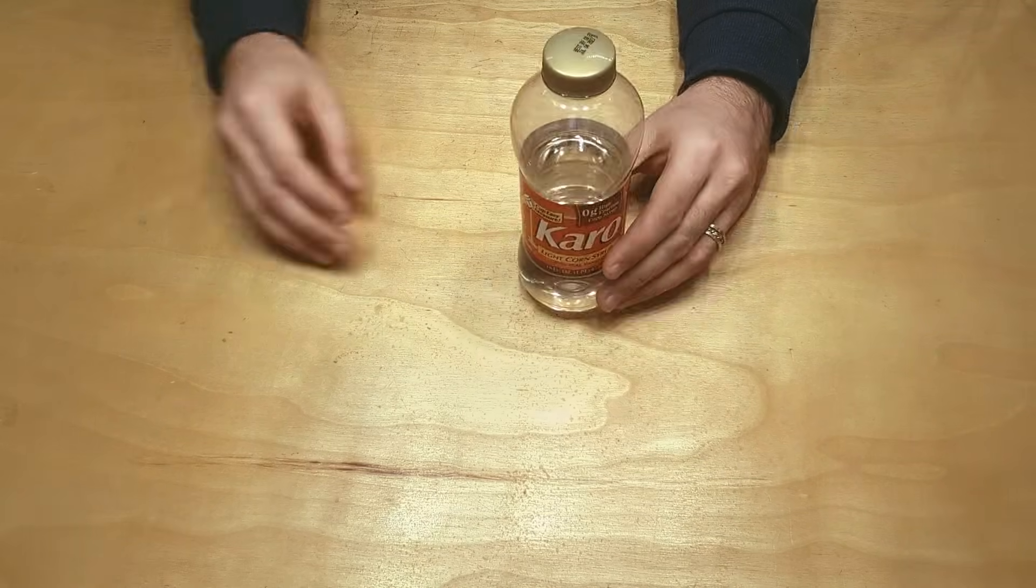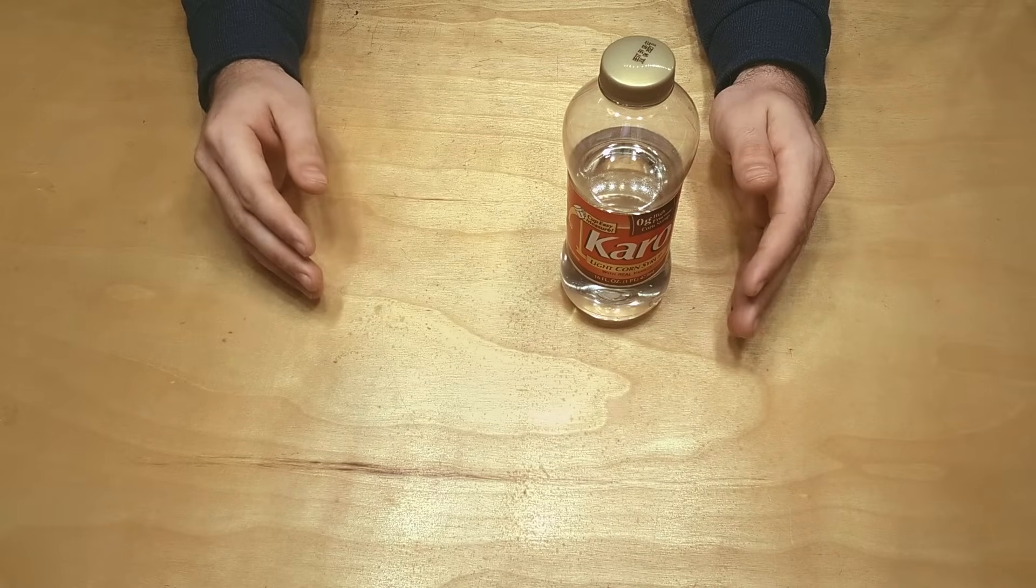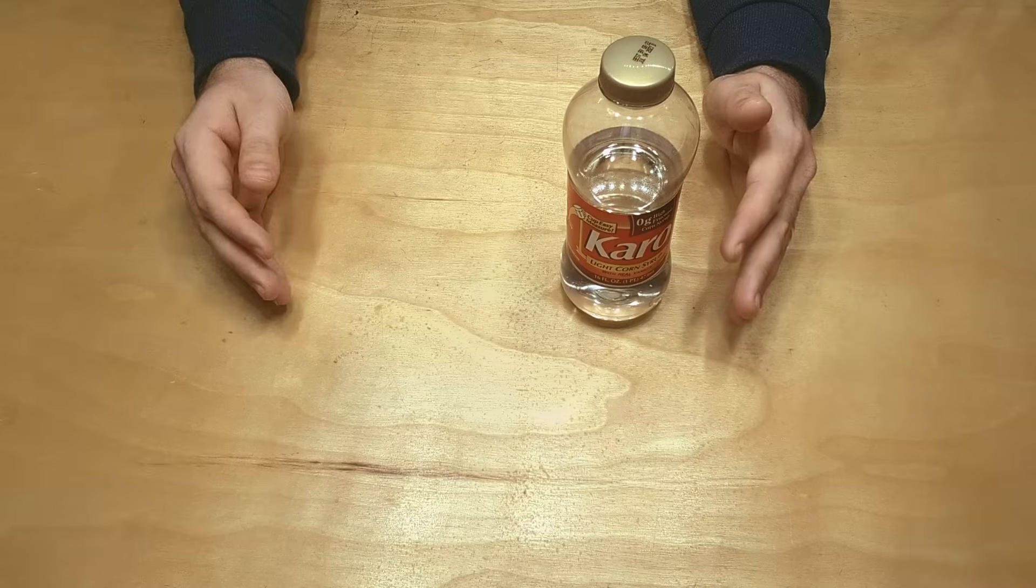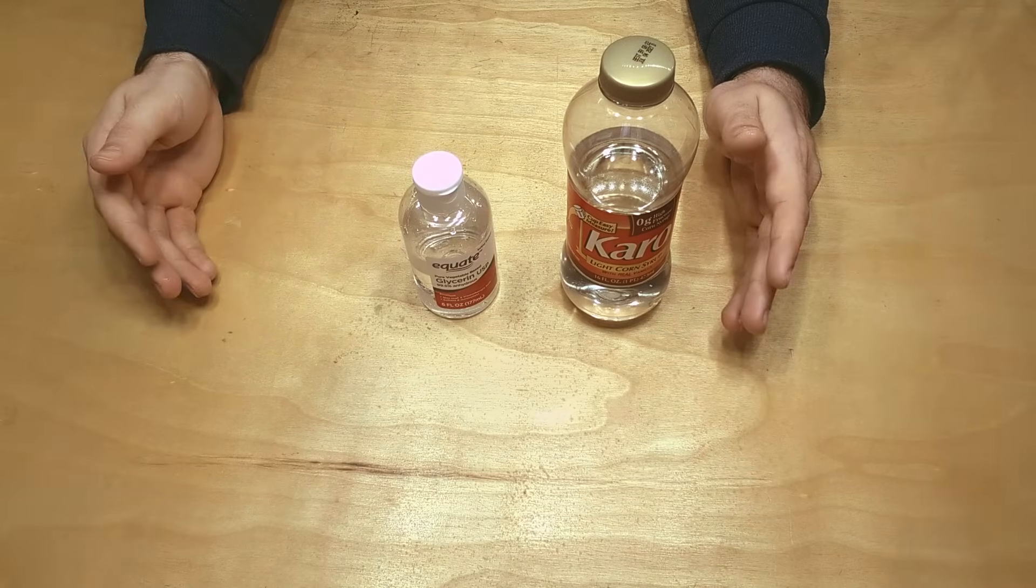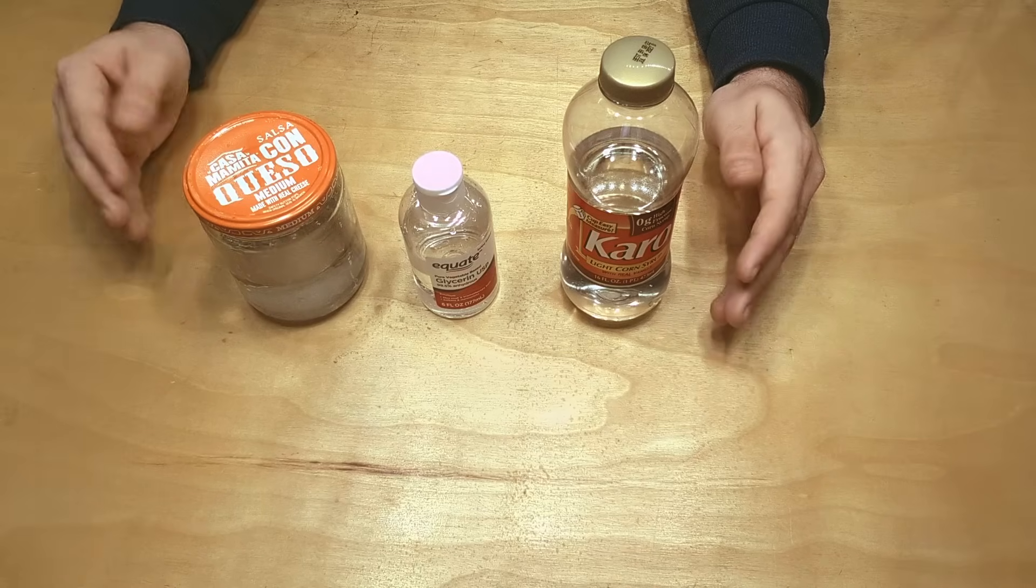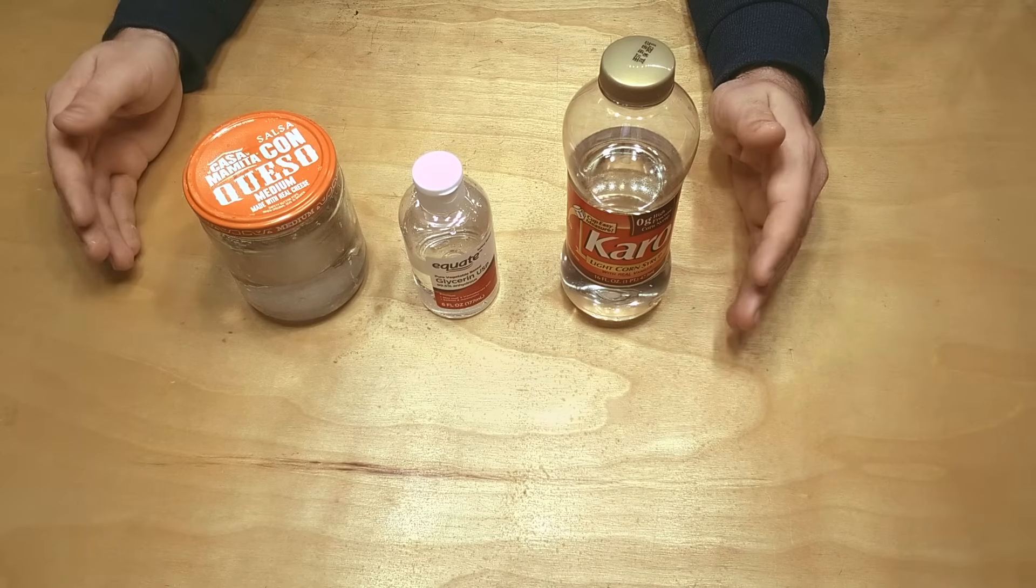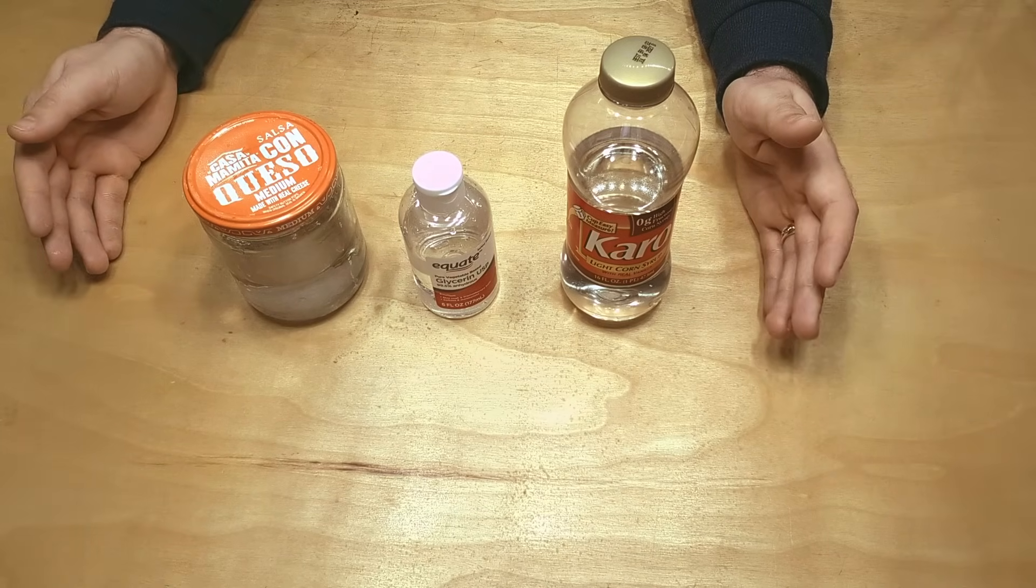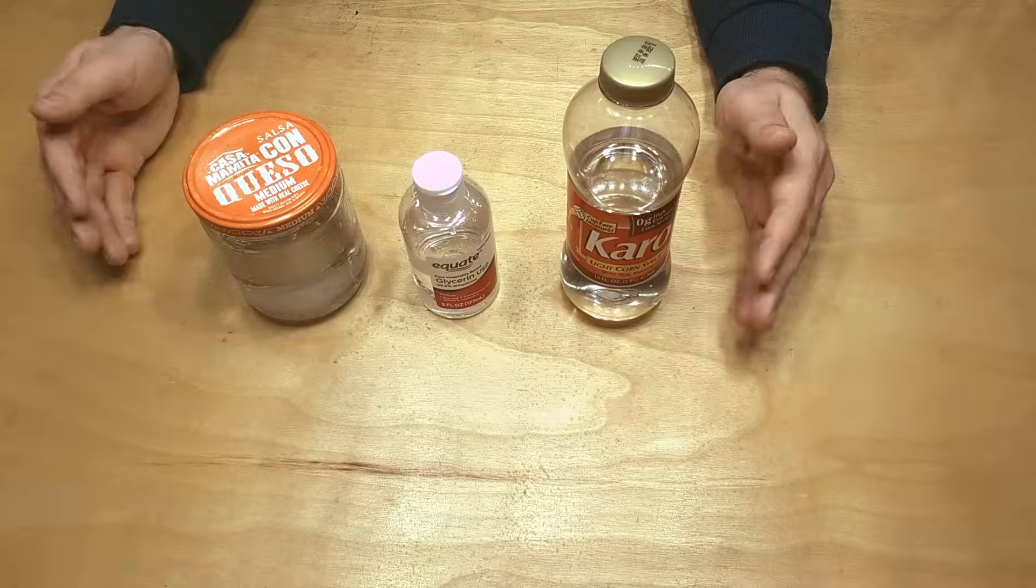First is corn syrup, which has a density of around 1.4 grams per cubic centimeter. And there's glycerin, which has a density of about 1.26. And finally, a table salt brine with a density of about 1.2 grams per cubic centimeter. So I decided to do a test pour with each of them.